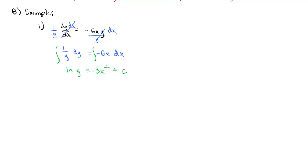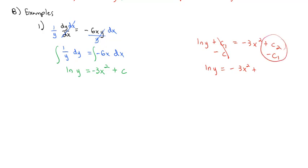We technically have a plus constant on both sides of this integral. However, we can subtract that constant from both sides, and those constants get morphed into one constant. So we had natural log of y plus the first constant equals negative 3x squared plus the second constant. If I subtract the first constant from both sides, I get natural log of y equals negative 3x squared plus whatever constant 2 minus constant 1 is. Either way, that's still a constant, so we'll use the letter c. As we're doing separation of equations, we're going to just put the constant on one side — usually the side with x, but either side works fine.